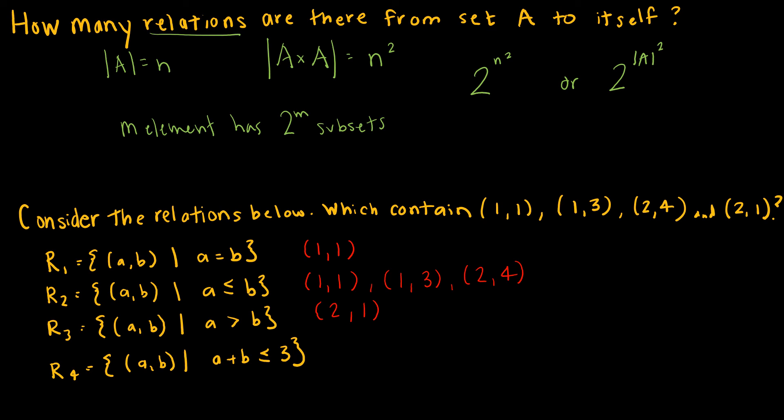So let's look at R4. R4 is where A plus B is less than or equal to 3. So 1 plus 1 is 2, that's less than or equal to 3, so we're good. 1 plus 3, obviously, is not less than or equal to 3, so that's not good. 2 plus 4 is not less than or equal to 3. 2 plus 1 is 3, and that works because of that or equal to. So 2 plus 1 is 3.